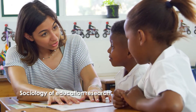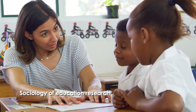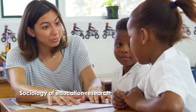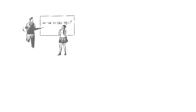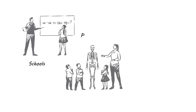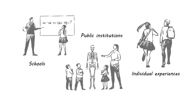Sociology of education research looks into the education system from a sociological perspective. It examines how schools, public institutions, and individual experiences affect education and its outcomes.